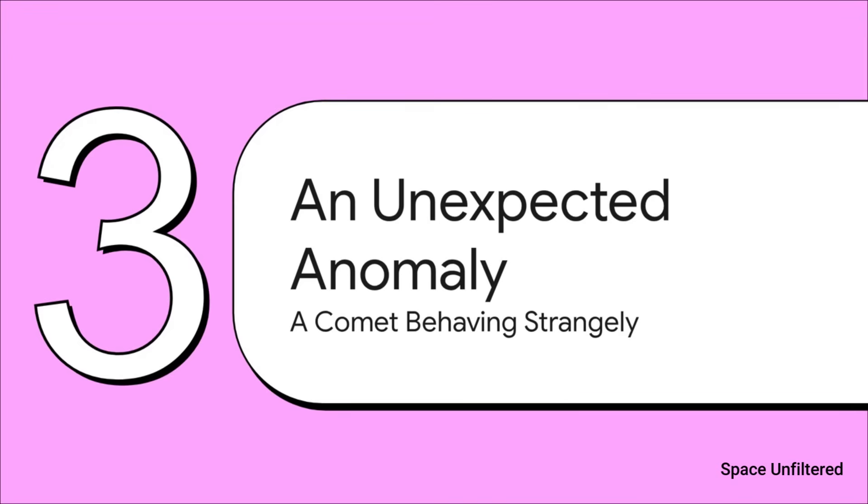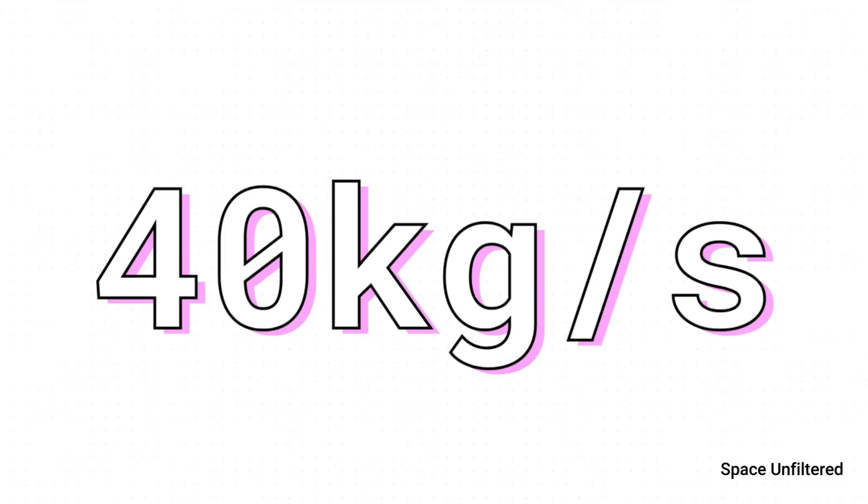Now let's talk about the unexpected anomaly. Because this discovery wasn't just 'hey, we found water,' it actually revealed a complete surprise. This comet wasn't behaving at all like scientists thought it would. By analyzing that ultraviolet glow, the team was able to calculate how much water the comet was losing. And the number is staggering: about 40 kilograms every single second.